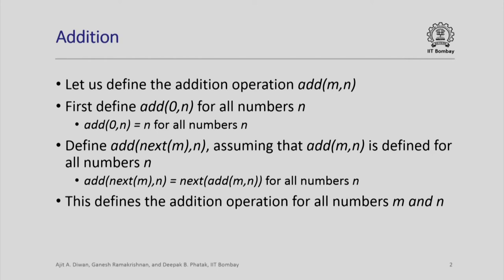This defines the addition operation for all numbers m and n, because we have defined it for m equal to 0 and all values of n — add(0, n) = n — and assuming it is defined for add(m, n), it is defined for add(next(m), n). So add(next(0), n) = next(add(0, n)) = next(n); add(next(next(0)), n) = next(next(n)), and so on. This formal way of defining addition allows us to prove its properties and provides a clear, unambiguous meaning.